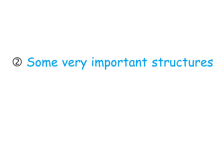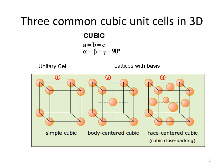Let's now turn to some very important structures found in many materials. There are three common cubic unit cells in 3D. A cubic cell has the same cell parameters in all three dimensions and all angles between them equal to 90 degrees. The simplest is the simple cubic, which has one lattice point per cell with lattice points only at the corners. Second is the body-centered cubic, where a central lattice point is added, giving two lattice points per cell. Third is the face-centered cubic, with lattice points at the corners and at the center of each face, giving four lattice points per cell.